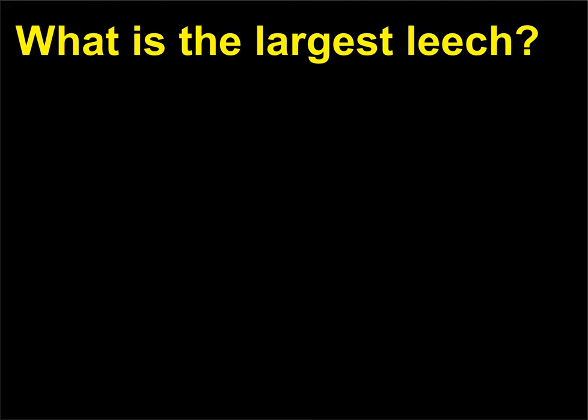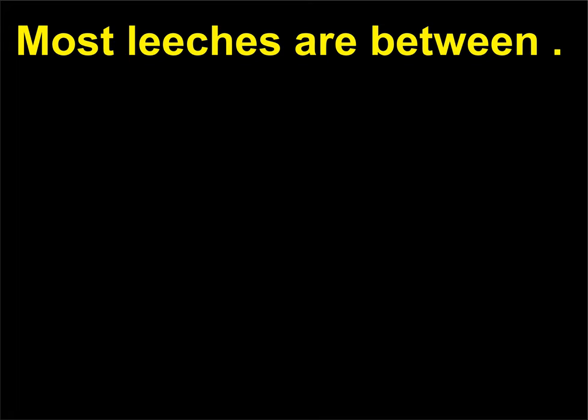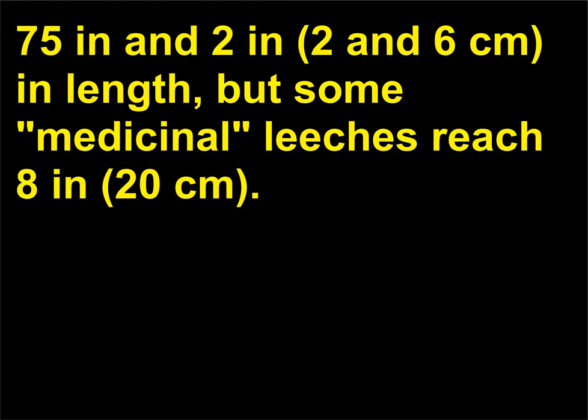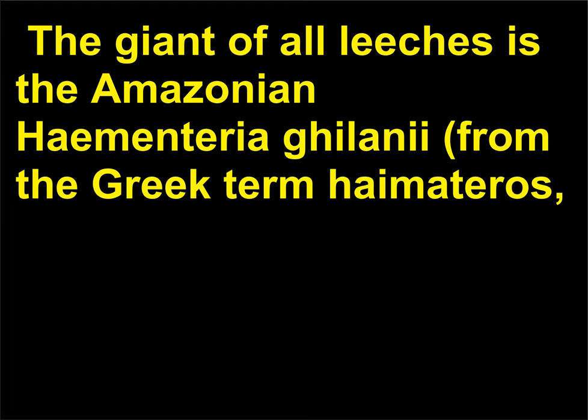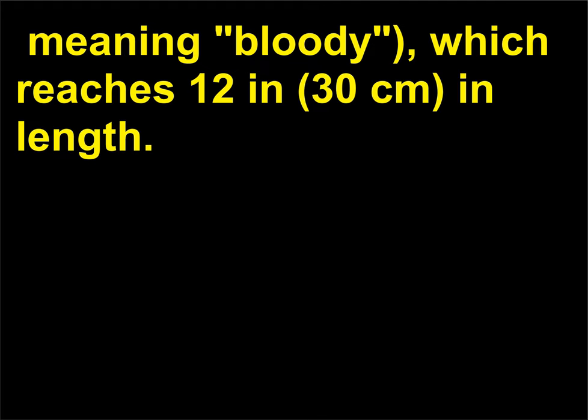What is the largest leech? Most leeches are between 0.75 in and 2 in (2 and 6 cm) in length, but some medicinal leeches reach 8 in (20 cm). The giant of all leeches is the Amazonian Haementeria ghilianii—from the Greek term Haematerus, meaning bloody—which reaches 12 in (30 cm) in length.